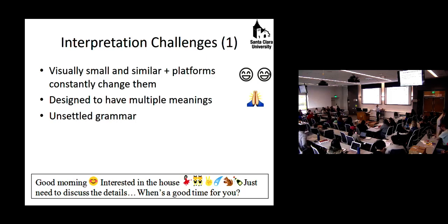The issue was that a landlord had advertised an apartment for rent and a prospective tenant sends the following text message. Good morning with a smiley emoji. Interested in the house, we got the dancing woman or Spanish dancer, the woman with bunny ears, the peace sign, the comet, the chipmunk, and the champagne bottle or the bottle with the cork popping. Just need to discuss the details. When's a good time for you?